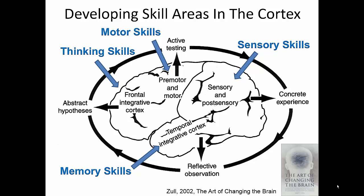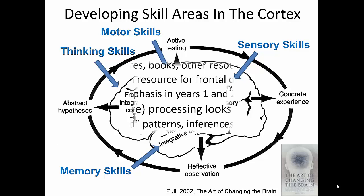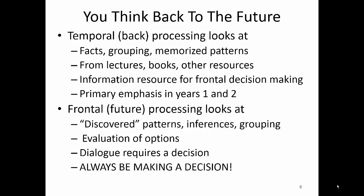Let's summarize the relationship between the anatomy of the brain and the way it processes information. One generalization that will help you remember the way your brain learns is that you think back to the future. The back, or temporal cortex, helps to recognize facts and patterns because that is where they're stored. This area of the brain also serves as a reservoir of information for the frontal area to use in decision making. This is also the area of the brain that is used most in pre-medical education where the focus is primarily on memorization. The front, or frontal cortex, makes decisions about the future by analyzing information that it receives from the back of the brain and also from the sensory cortex.